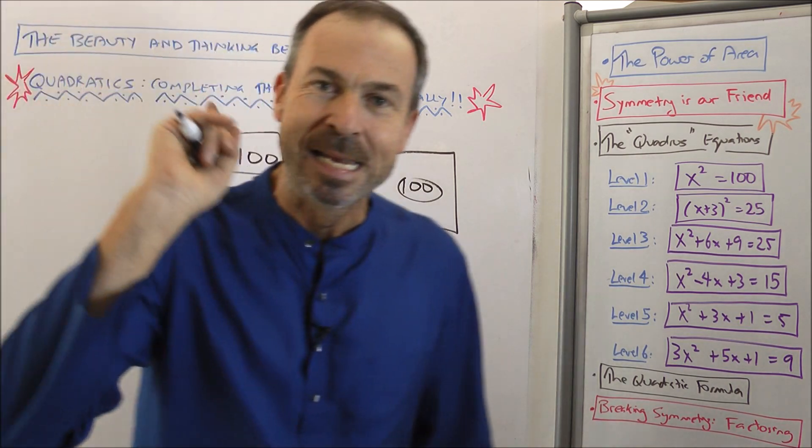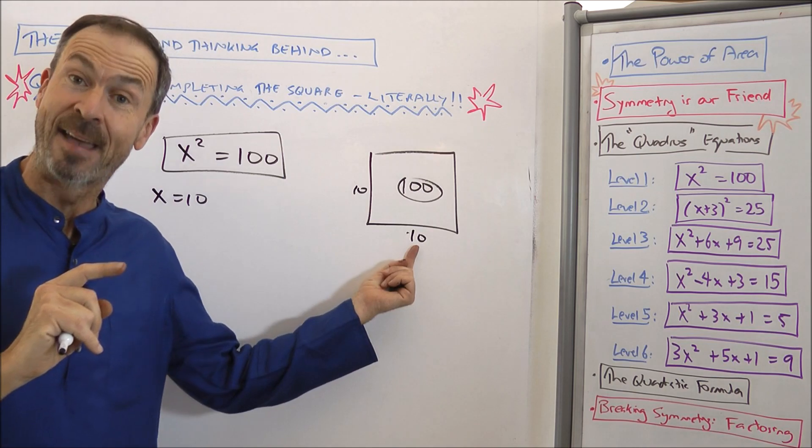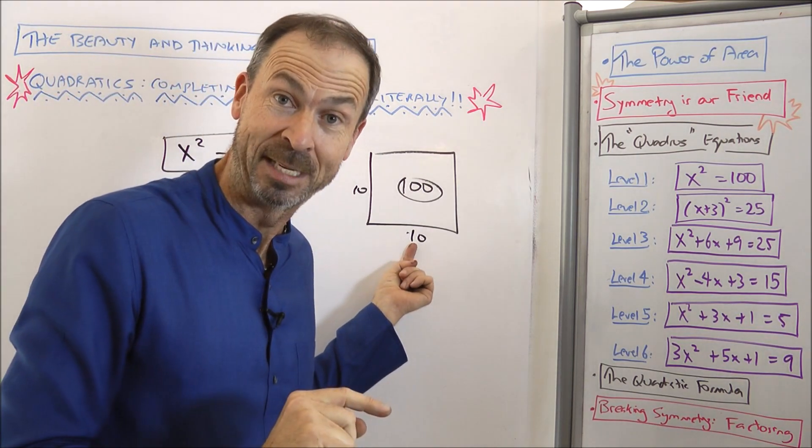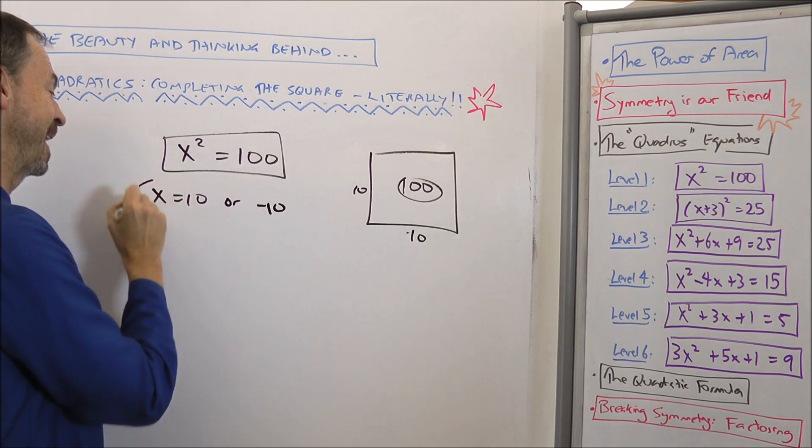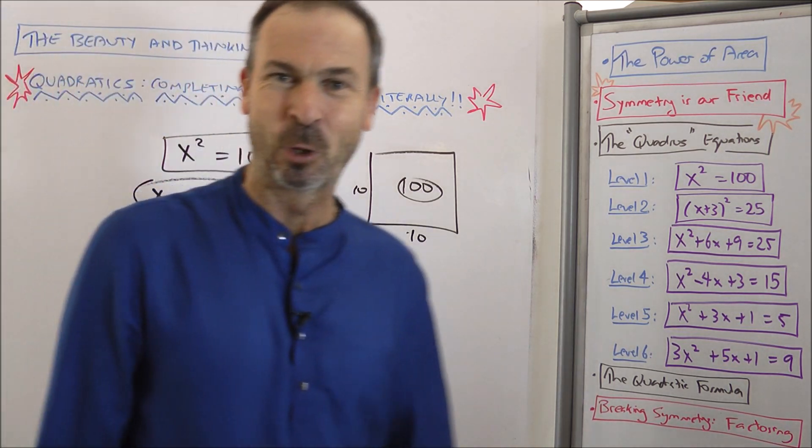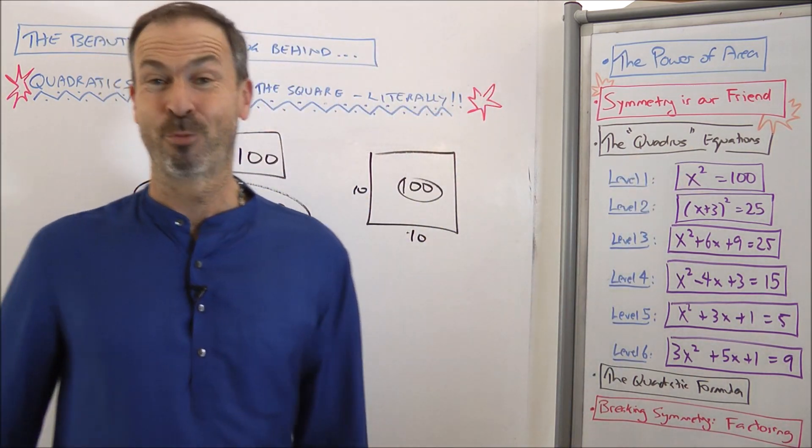But of course, now we're playing with arithmetic. We'll go beyond just the purely geometric answers. We'll allow another answer because there's another number in arithmetic whose square is 100. Namely, negative 10. So there is my answer to our very first quadris equation, our very first quadratic equation. And that's all level one is. Pretty straightforward.